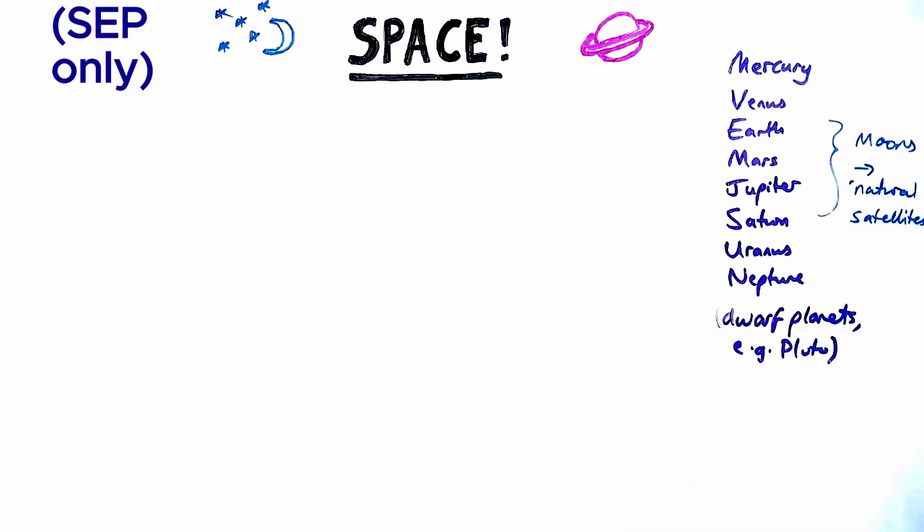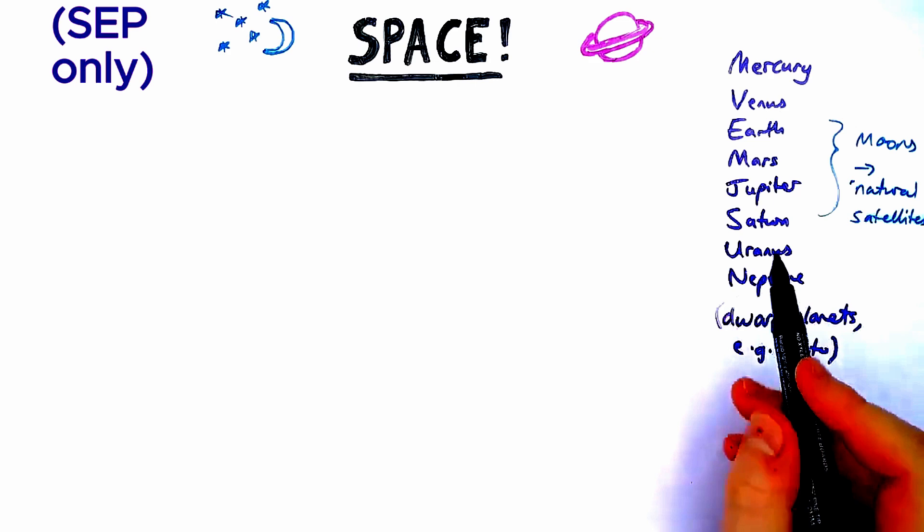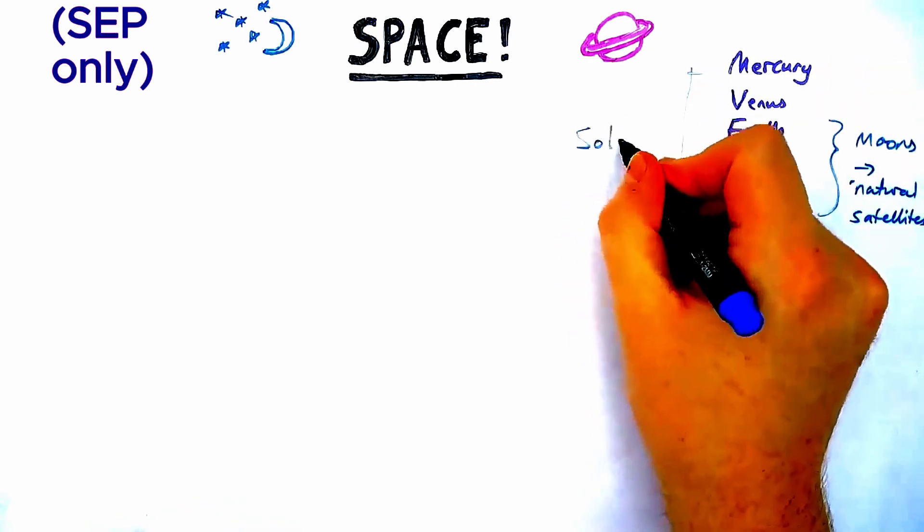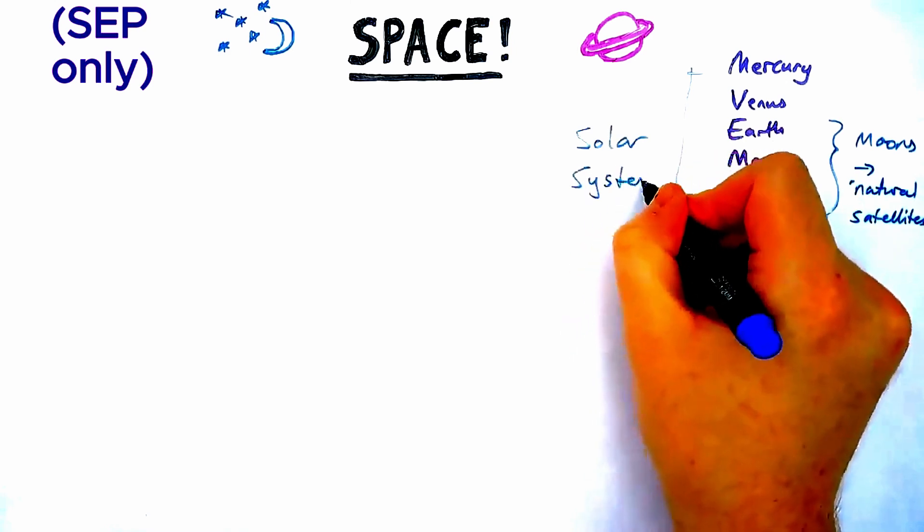We call them natural satellites. Jupiter and Saturn have absolutely loads between them - we keep finding more, it's probably going to reach 100 soon. Now bigger than planets, let's look at the scale of space.